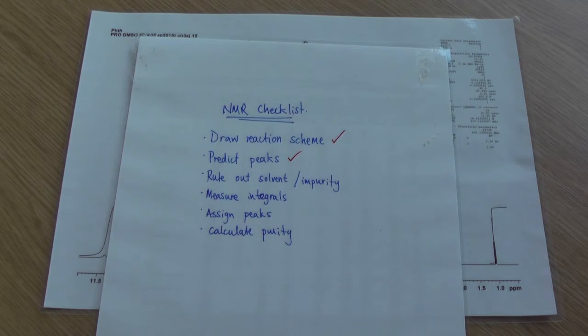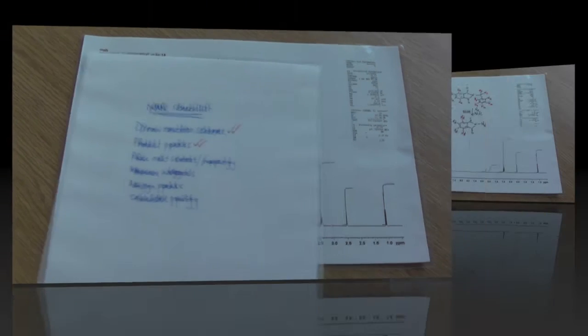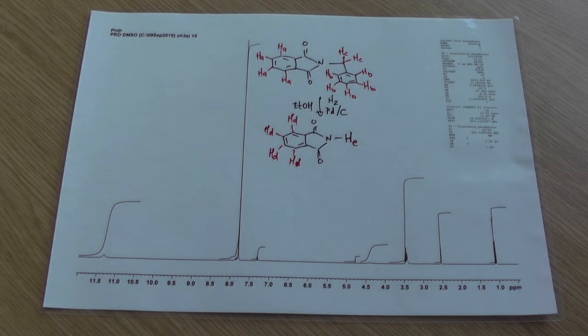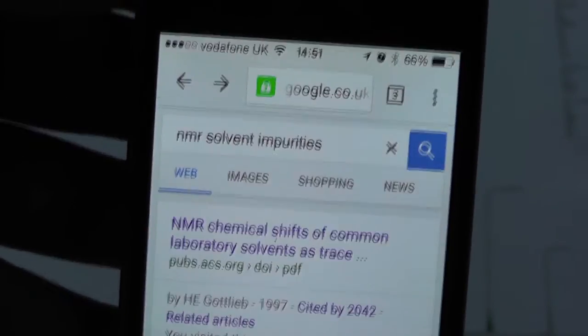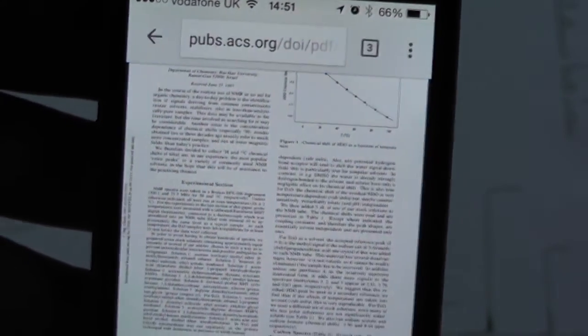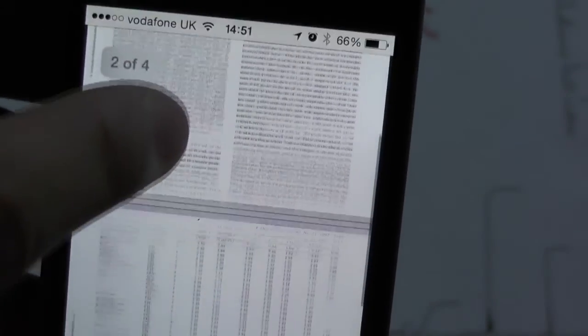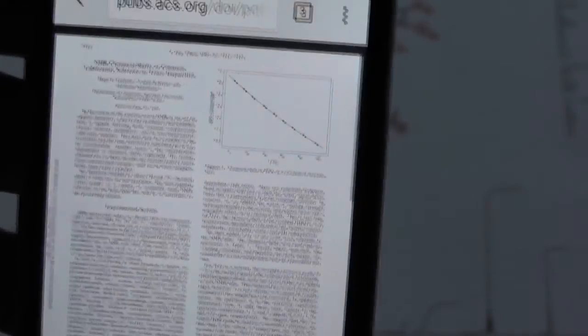There's a big table full of common solvent impurity peaks that might be present in an NMR spectrum. All you need to do to get to it is google NMR solvent impurities and click on the first link. That will take you to a big PDF with a big table full of numbers. To make things a little bit easier we've printed it out.